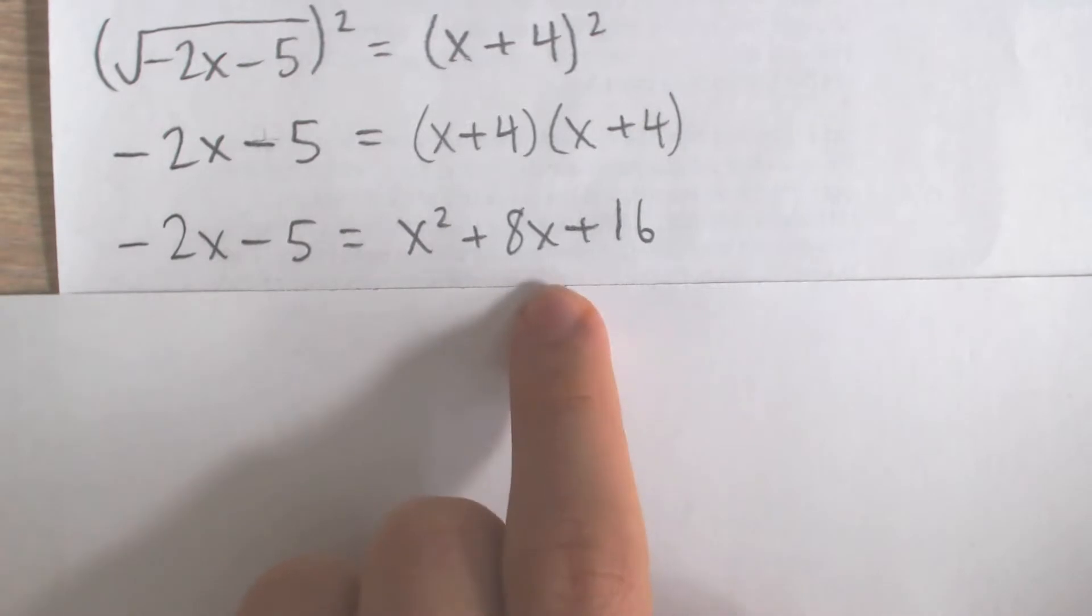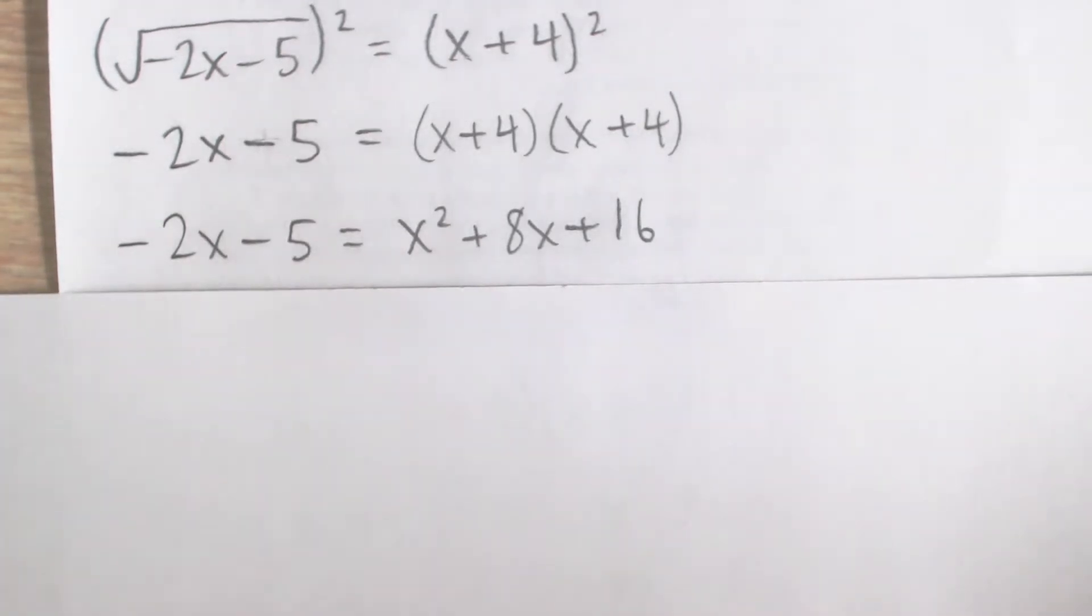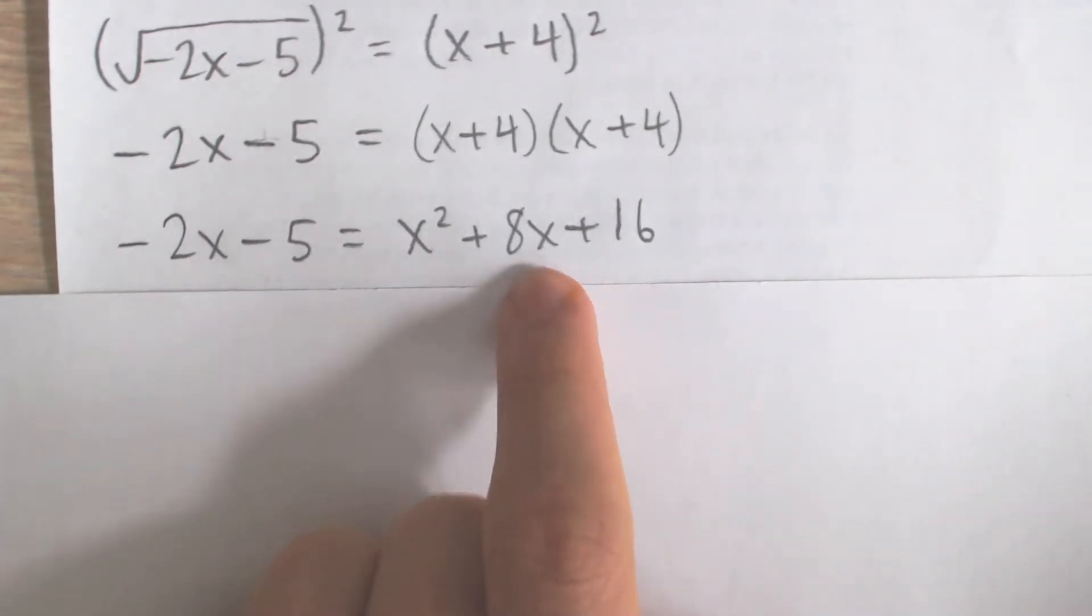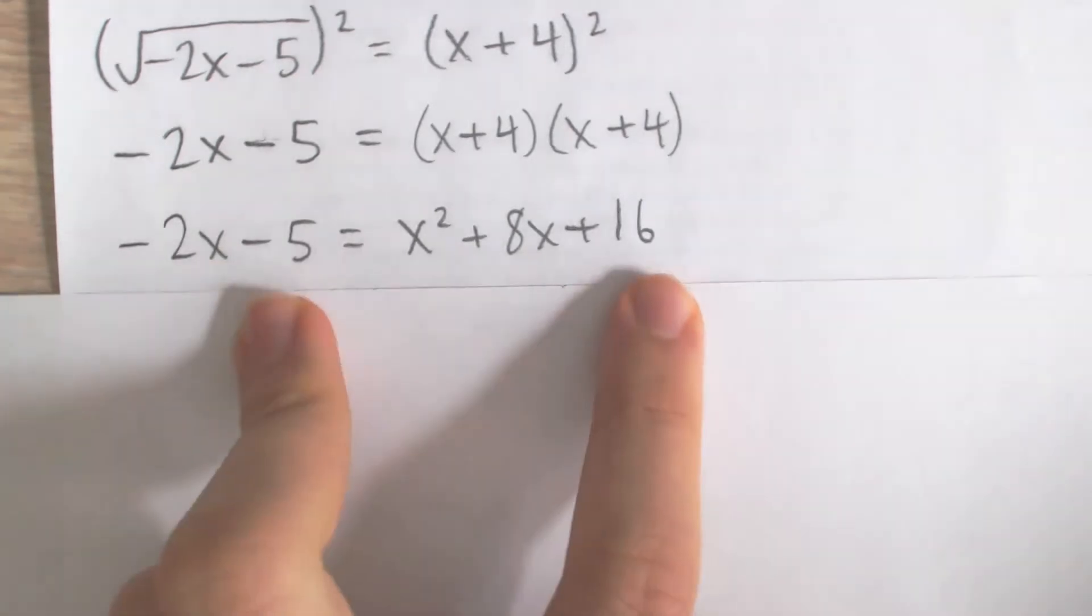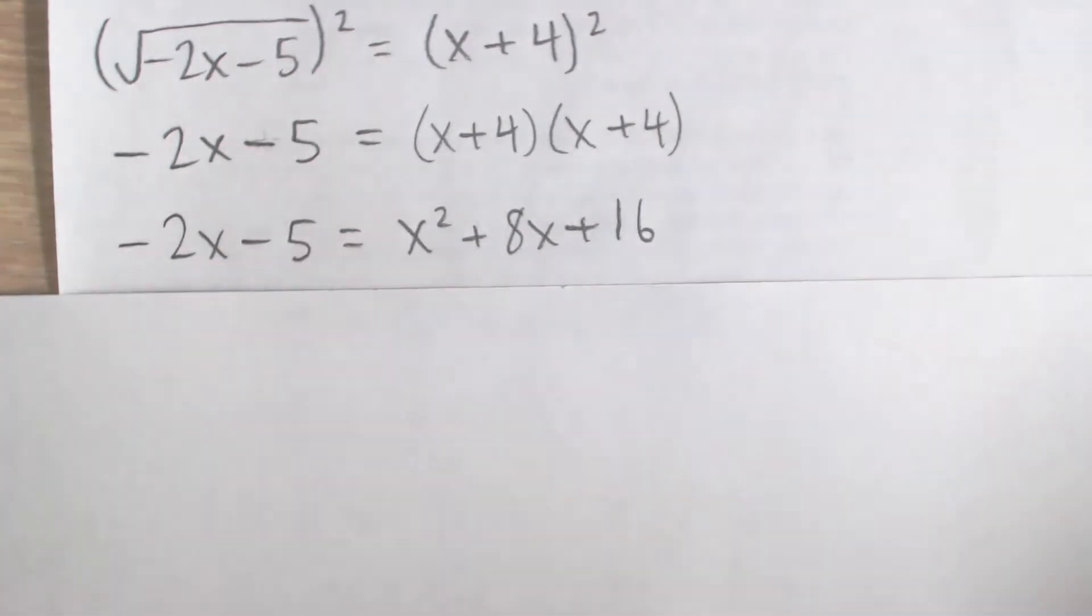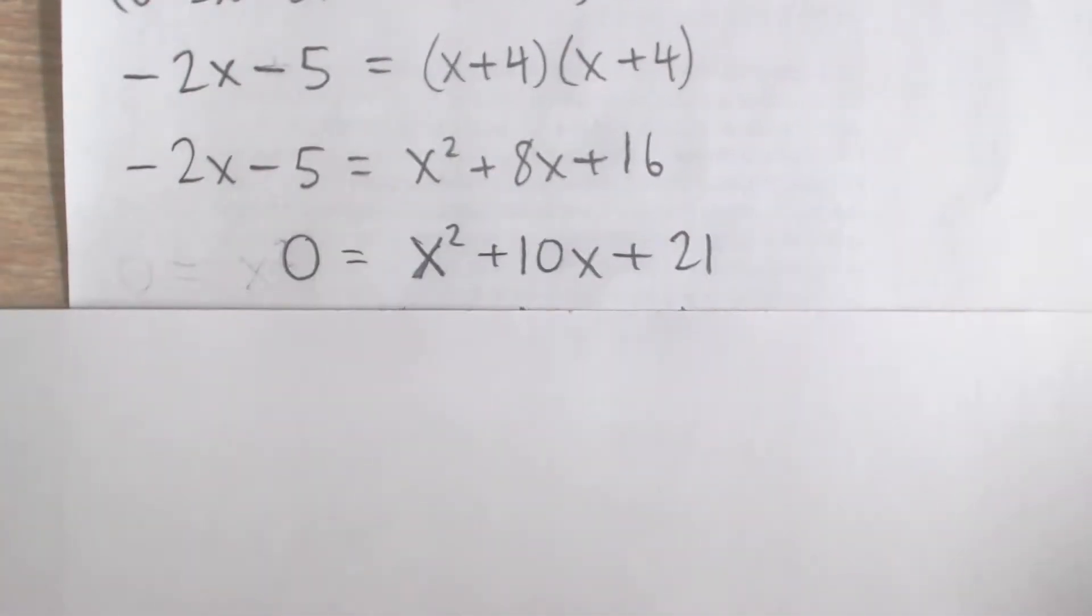So add 2x to both sides and add 5 to both sides. We're going to get 10x on the right, 8 plus 2. And we're going to get 16 plus 5, that's 21 on the right. So we have 0 equals x squared plus 10x plus 21.